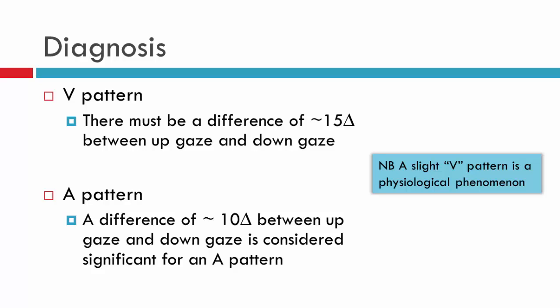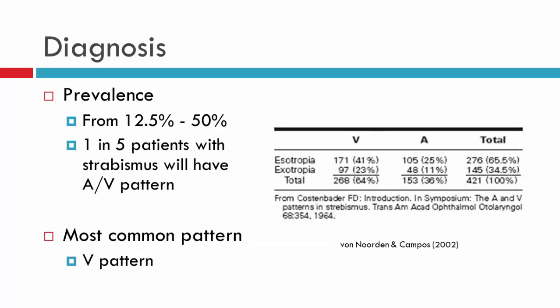Specifically related to AV patterns: to classify a patient as having a V pattern, since V patterns are physiological, you will need a difference of at least 15 diopters between up gaze and down gaze in terms of the horizontal deviation. For the A pattern, the difference need only be 10 diopters between up and down gaze. AV patterns are the most common alphabet patterns. From the Von Norden and Campos textbook, 64% of patients will have a V pattern as compared to 36% having an A pattern, and generally V patterns are considered the most common alphabet pattern.